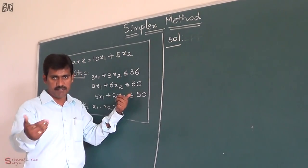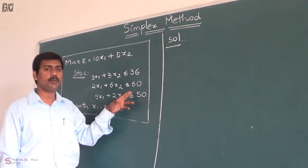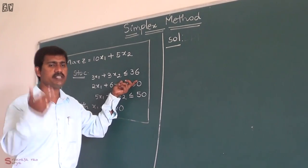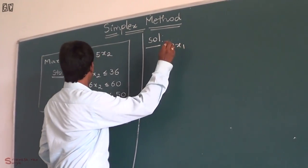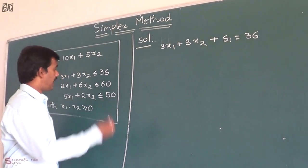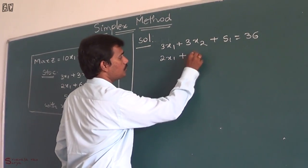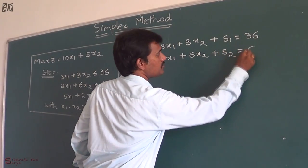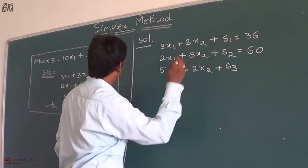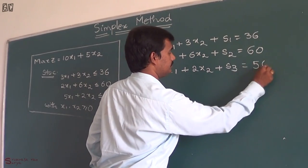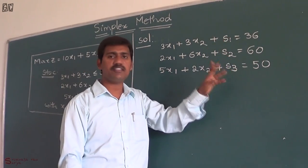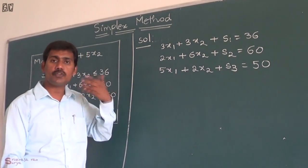The next step is to make these inequalities into equalities by introducing slack variables s1, s2, and s3. Because these are all less-than-or-equal-to constraints. So: 3x1 plus 3x2 plus s1 equals 36; 2x1 plus 6x2 plus s2 equals 16; and 5x1 plus 2x2 plus s3 equals 50.